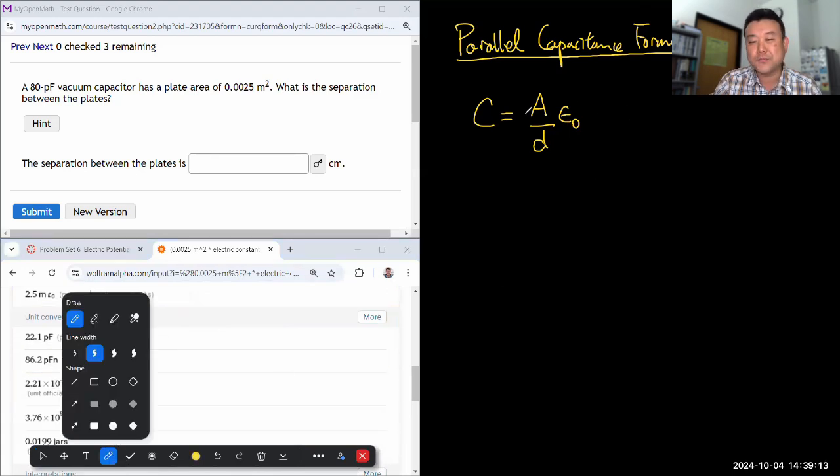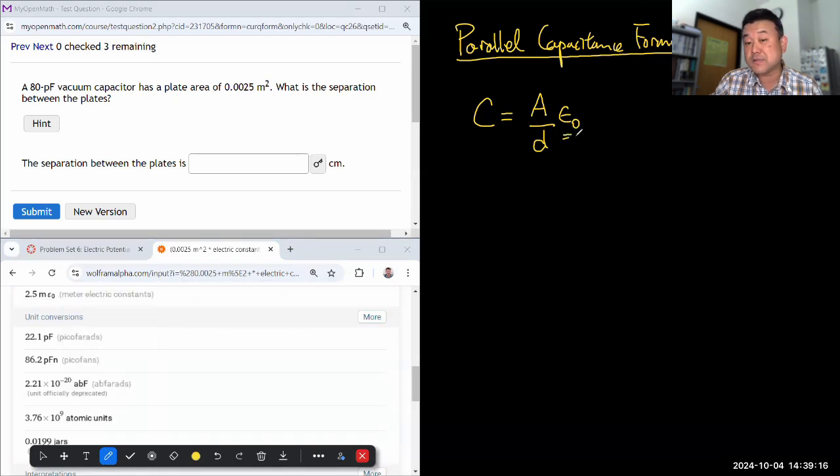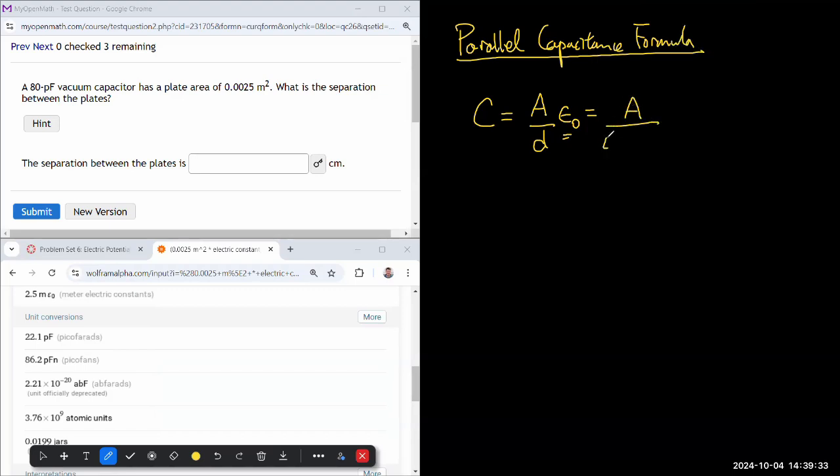And again, because I'm trying to use Coulomb constant more, the version that uses Coulomb constant instead of the electric constant would be this. Basically, wherever you see this, replaced by 1 over 4 pi Coulomb constant. So, it will be A divided by 4 pi Coulomb constant times d. So, to answer this question, I need to take this equation, solve it for d. So, the separation d is equal to area divided by 4 pi times Coulomb constant times the capacitance.